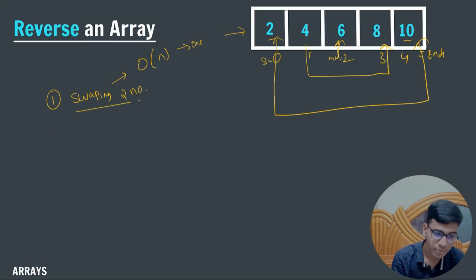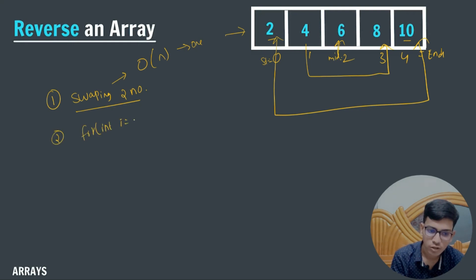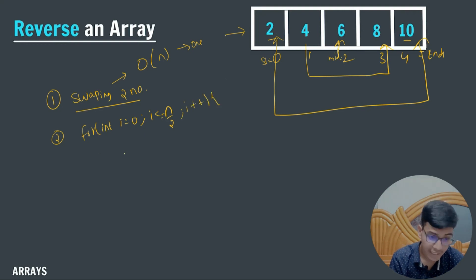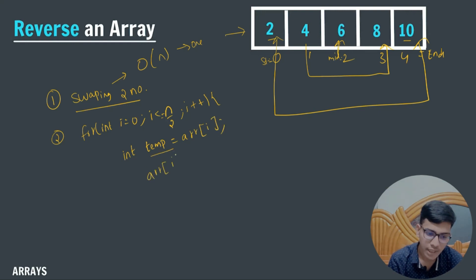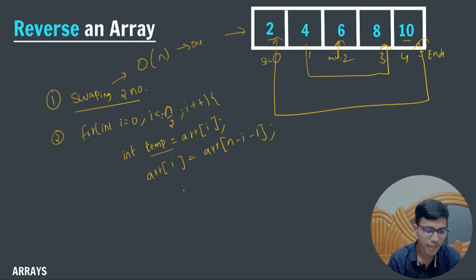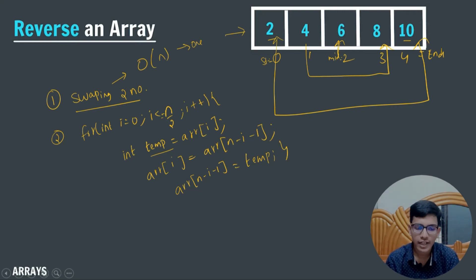The second step: we run a loop — for(int i = 0; i < n/2; i++). In this loop, we create a temporary variable: int temp = arr[i]. Then arr[i] = arr[n - i - 1]. After that, arr[n - i - 1] = temp. This is how the swapping, or the reversing of the array, works.